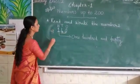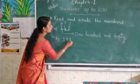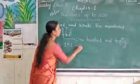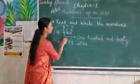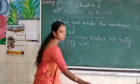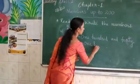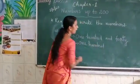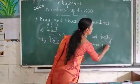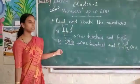One more example for you. Look at this. How to read this three-digit number? How many hundreds are there? One. So we read one hundred. How many tens and ones? We read them together — fifty-one. One hundred and fifty-one. Did you see how to read this three-digit number?